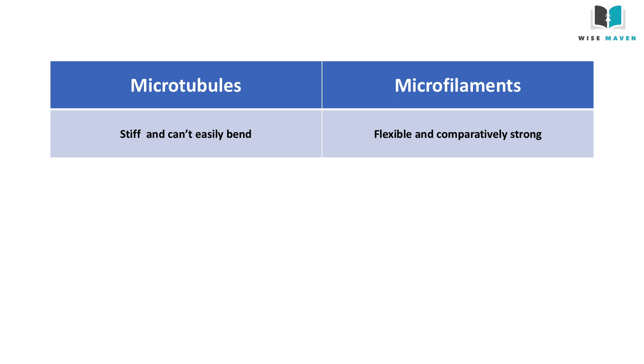Microtubules are stiff and can't easily bend, whereas microfilaments are flexible and comparatively strong.